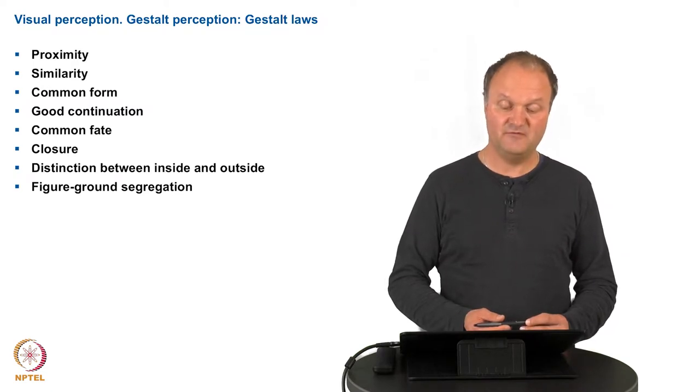The law of common fate explains that things moving in the same direction are grouped together. The law of closure says that contours are completed. And there's the distinction between inside and outside—the so-called figure-ground segregation.